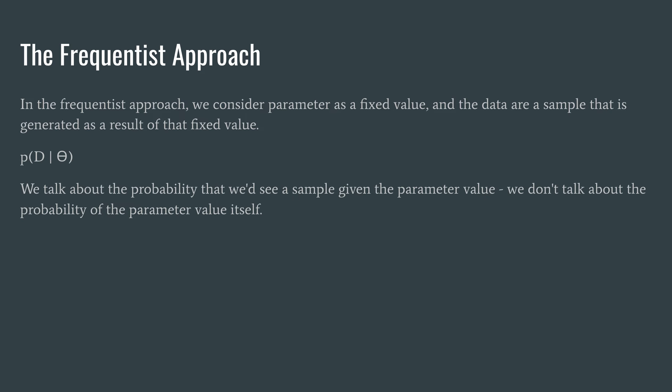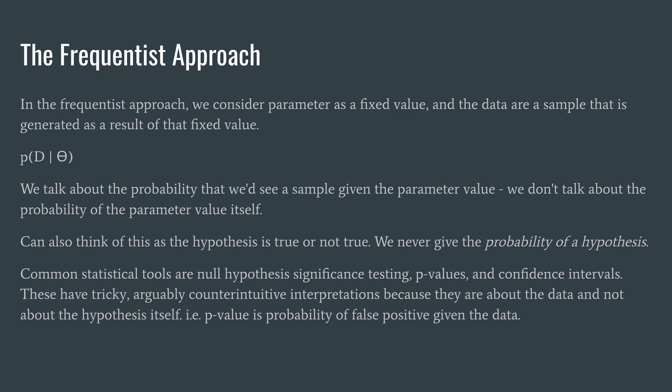So we talk about the probability that we see a sample given the parameter value. We don't talk about the probability of the parameter value itself. You can also think of this as the hypothesis is true or not true. We never give the probability of the hypothesis.